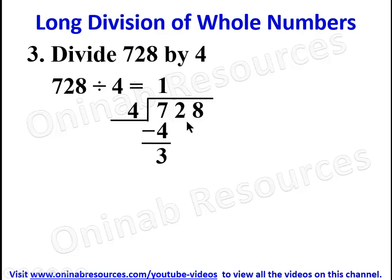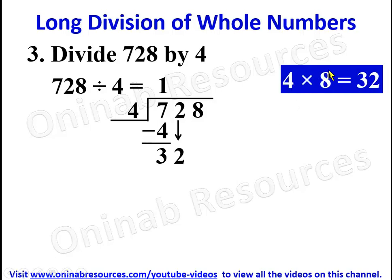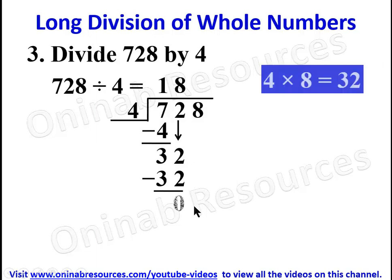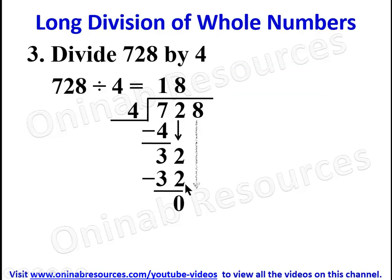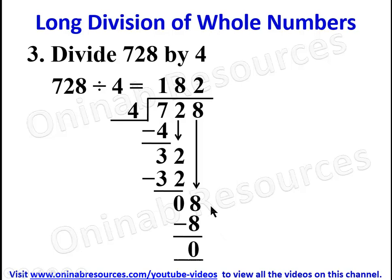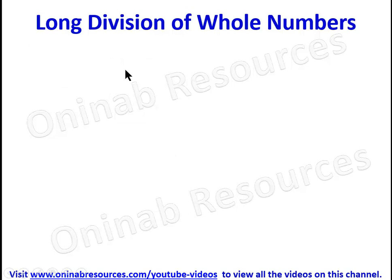We bring down the next digit, which is two — thirty-two divided by four. We know four times eight is thirty-two, so thirty-two divided by four gives eight. Four times eight gives thirty-two, then we subtract: thirty-two minus thirty-two gives zero. We bring down the next digit, which is eight. Eight divided by four — two times four gives eight, so eight divided by four is two. Two times four gives eight, and eight minus eight is zero.